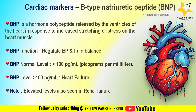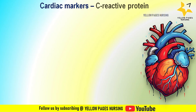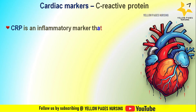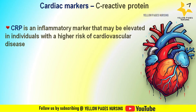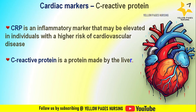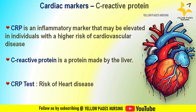C-reactive protein (CRP) is an inflammatory marker that may be elevated in individuals with a higher risk of cardiovascular disease. CRP is a protein made by the liver. The CRP test is used to identify any infection, help diagnose chronic inflammatory diseases such as rheumatoid arthritis or lupus, and identify the risk of heart disease. A high level of high-sensitivity CRP (hs-CRP) in the blood has been linked to an increased risk of heart attacks.